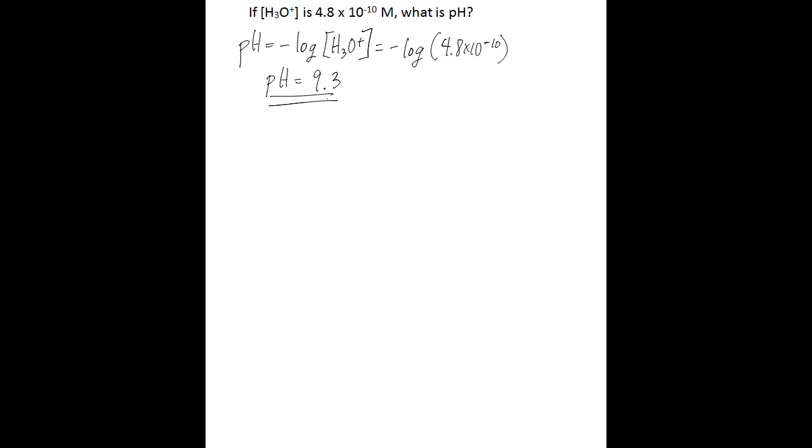Now what if you need to go the other way? Let's do another problem quickly here. So if pH is 8.1, what is the hydronium ion concentration? So we're going the other way this time, from pH to hydronium ion concentration.